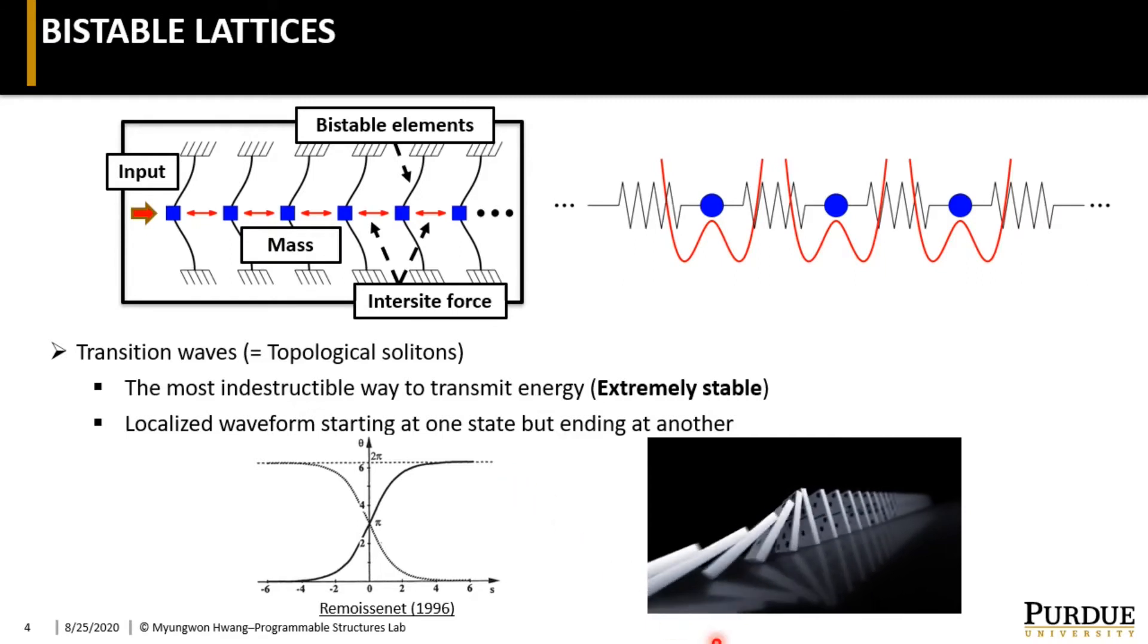Its behavior can be best illustrated by these falling dominoes. Once we knock down one of the dominoes, a wave of falling dominoes is formed and all end up in a toppled state that is different from the initial state.